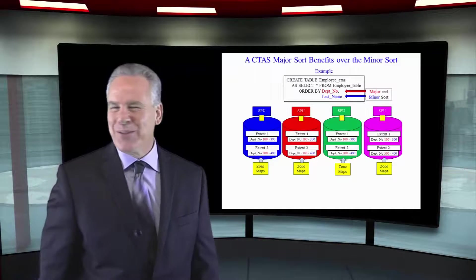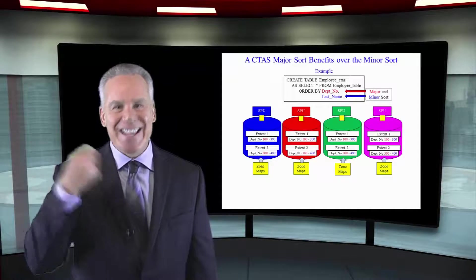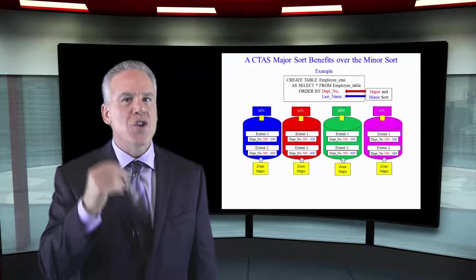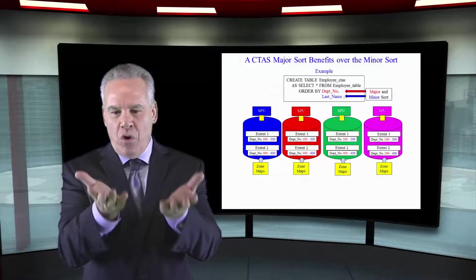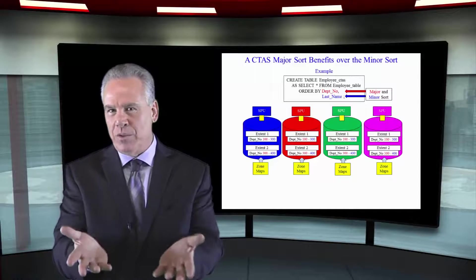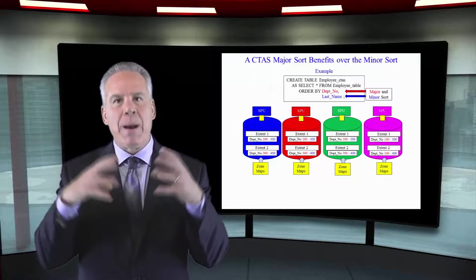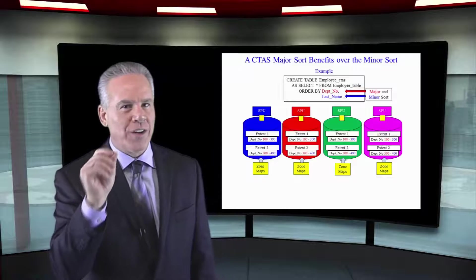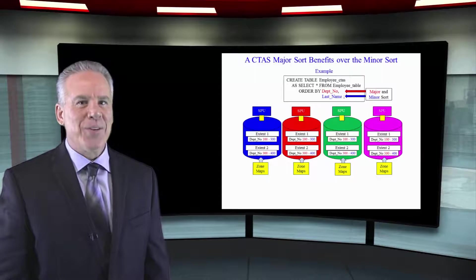Multiple columns in the minor sort give less and less benefit as time goes on. So we're going to see another technique — if we want multiple columns to really have the same power in the zone maps, we're going to create a cluster-based table. We'll see that coming up.